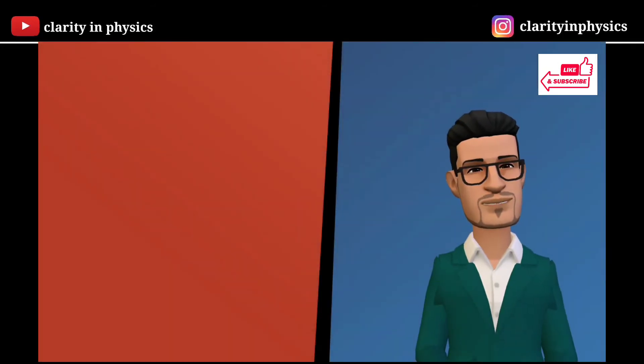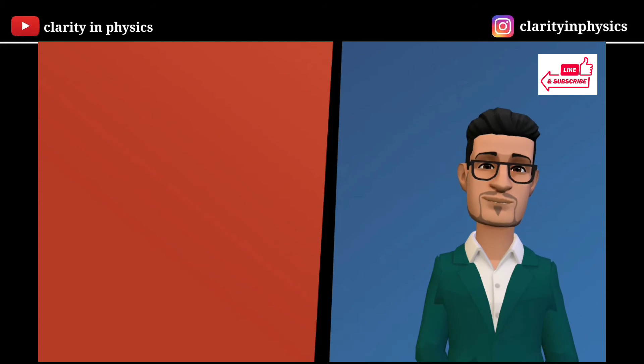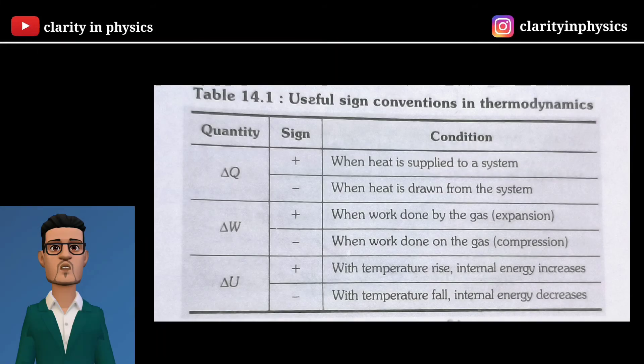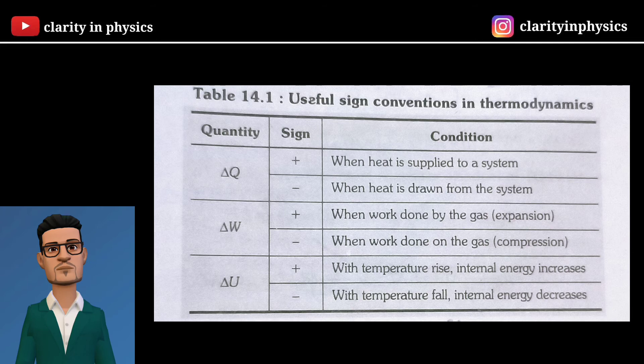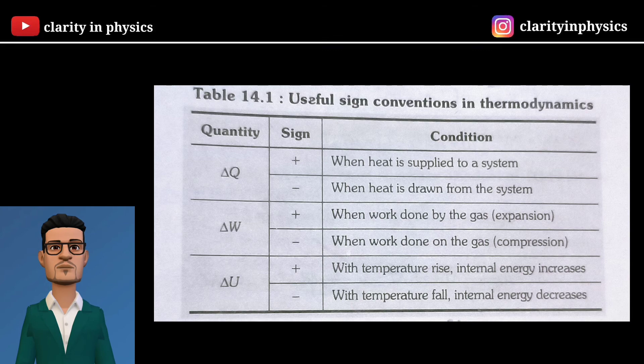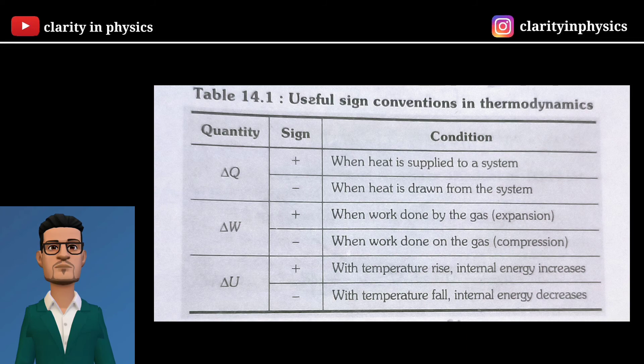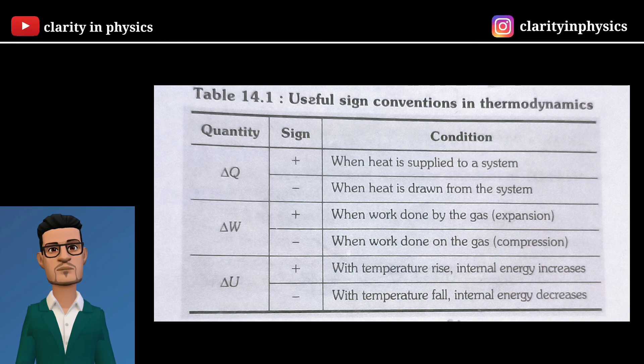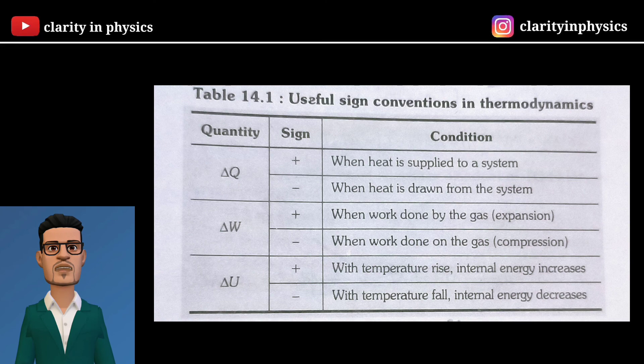Now some useful sign conventions in thermodynamics: ΔQ must be positive when heat is supplied to a system. ΔQ will be negative when heat is drawn from the system. ΔW is positive when work is done by the gas (expansion). ΔW is negative when work is done on the gas (compression).